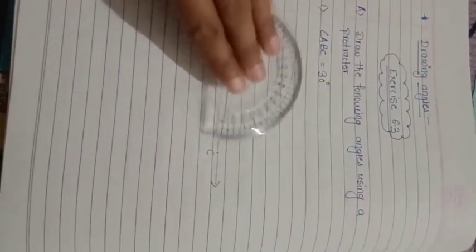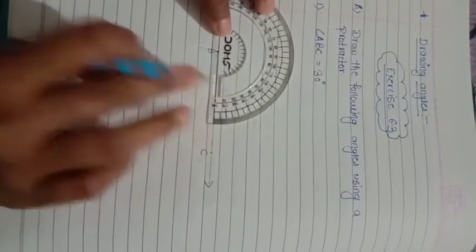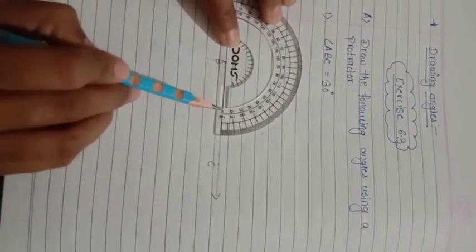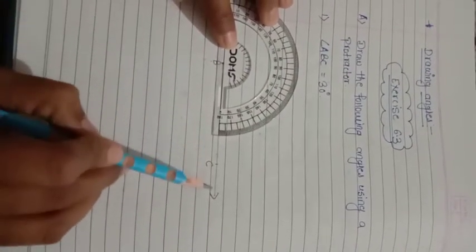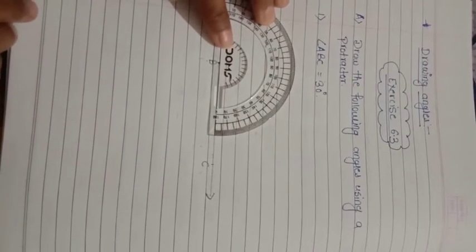Now take the protractor and keep the center of the protractor at point B so that the baseline of the protractor coincides with ray BC. Now use the inner scale to measure the angle 30 degrees.